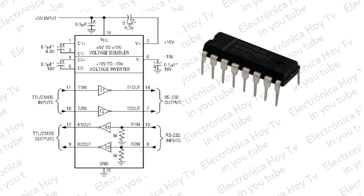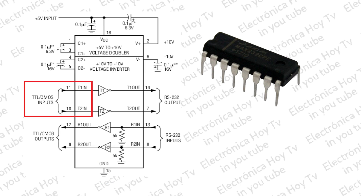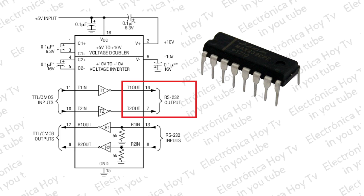La utilización del chip es bastante simple. Se alimenta con 5 voltios entre los pines 15 y 16, y la data a transmitir se enviará por uno de los dos drivers, A o B, en las patillas 10 u 11. La señal saldrá por el driver correspondiente en la patilla 7 o 14, pero ya con la tensión amplificada e invertida.